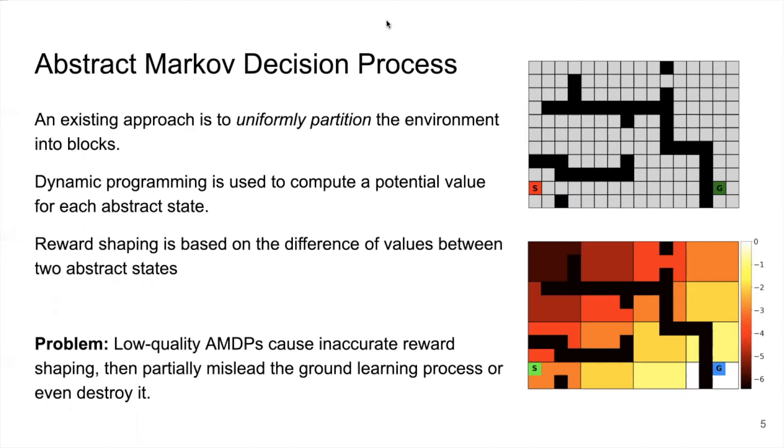Then we can use dynamic programming to compute the value function for the AMDP that is also presented in the image below in heatmap. Then reward shaping is based on the difference of potential values between two abstract states. More intuitively, the agent will be guided from darker blocks to lighter blocks on the heatmap.